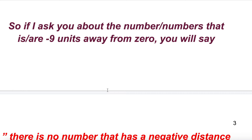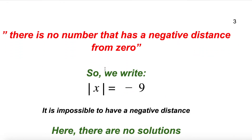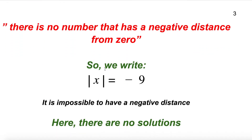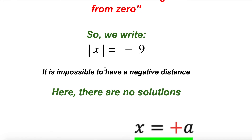What if I ask for a number whose absolute value is negative 9? Is there any number you can put inside absolute value that gives a negative result? No. Even negative 1 has a distance of positive 1 from zero. There is no number with a negative distance from zero. So when you are asked to solve an equation like the absolute value of x equals negative 9, you simply say there is no solution.